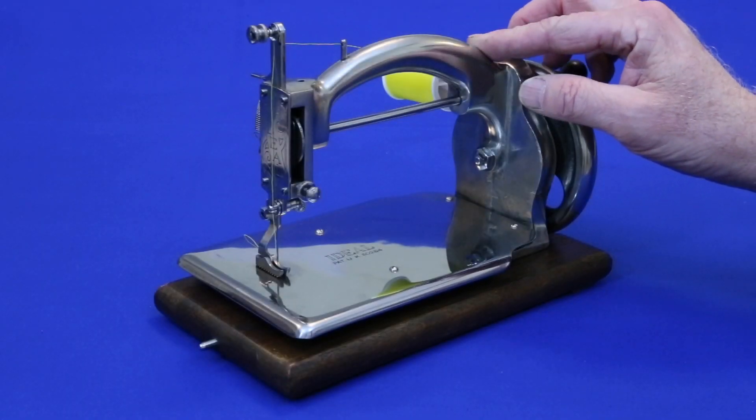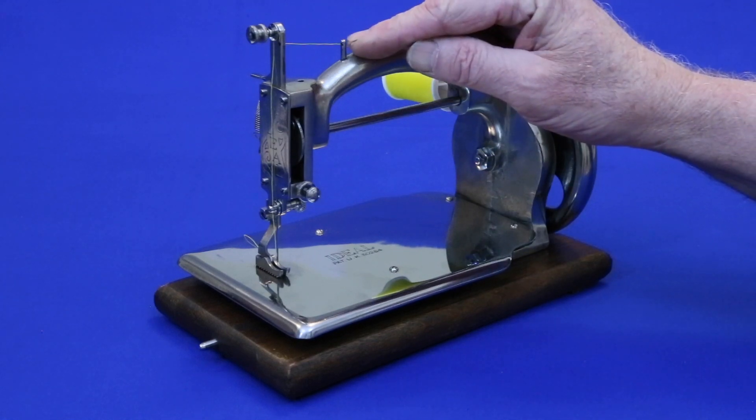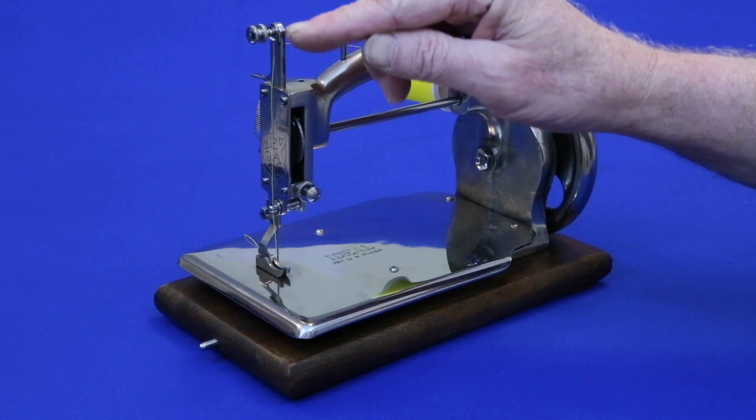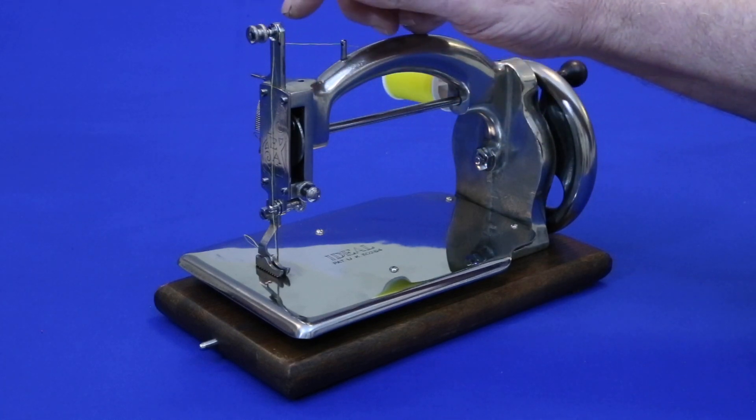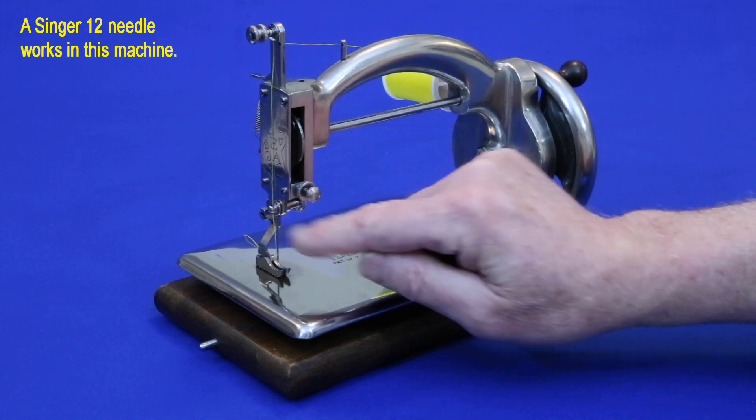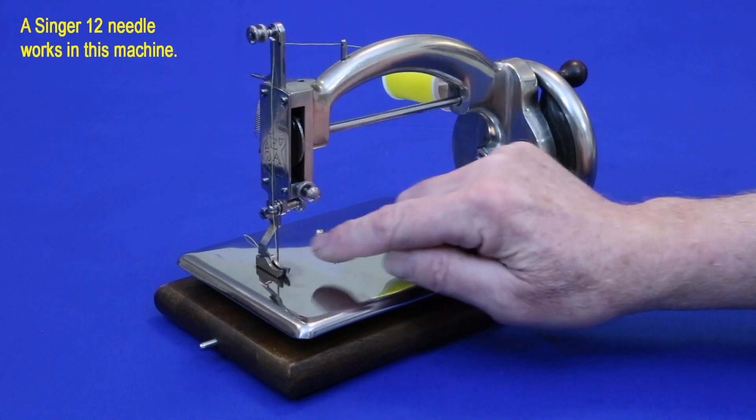To thread, bring the thread from the spool over through this guide, through the hole at the top of the needle bar, three quarters of a turn around and underneath the tensioning disc, down to this guide, and through the needle from left to right.